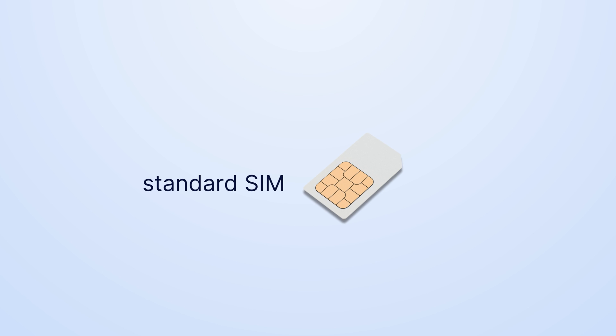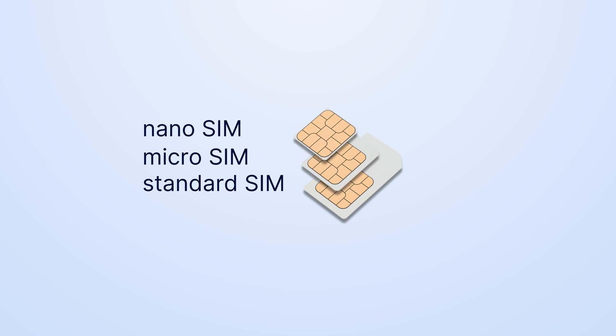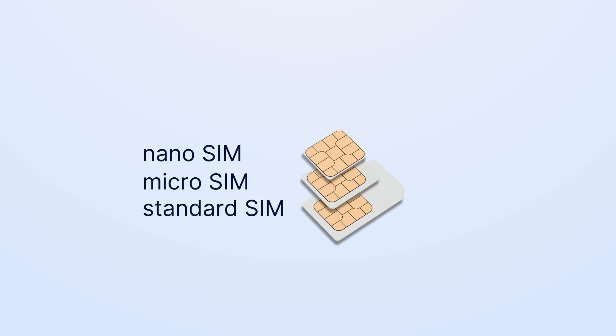Moving on to size difference, SIM cards come in different sizes, such as standard, micro, and nano. That's not the case with an eSIM card — it's extremely small, even smaller than a nano SIM card.